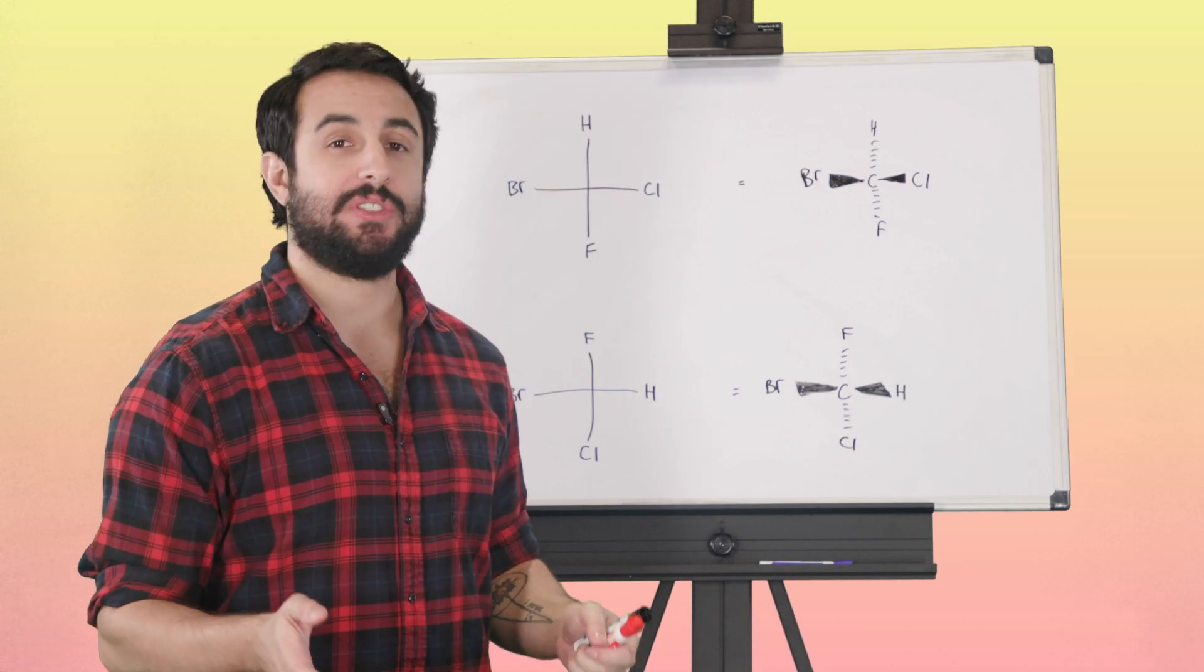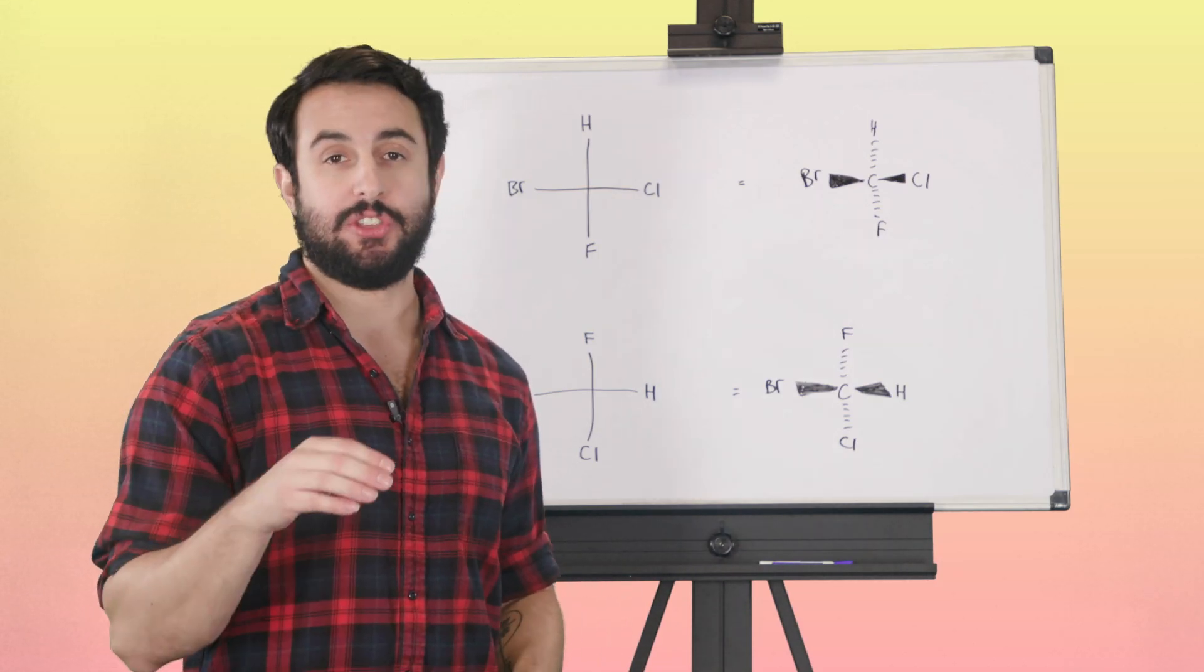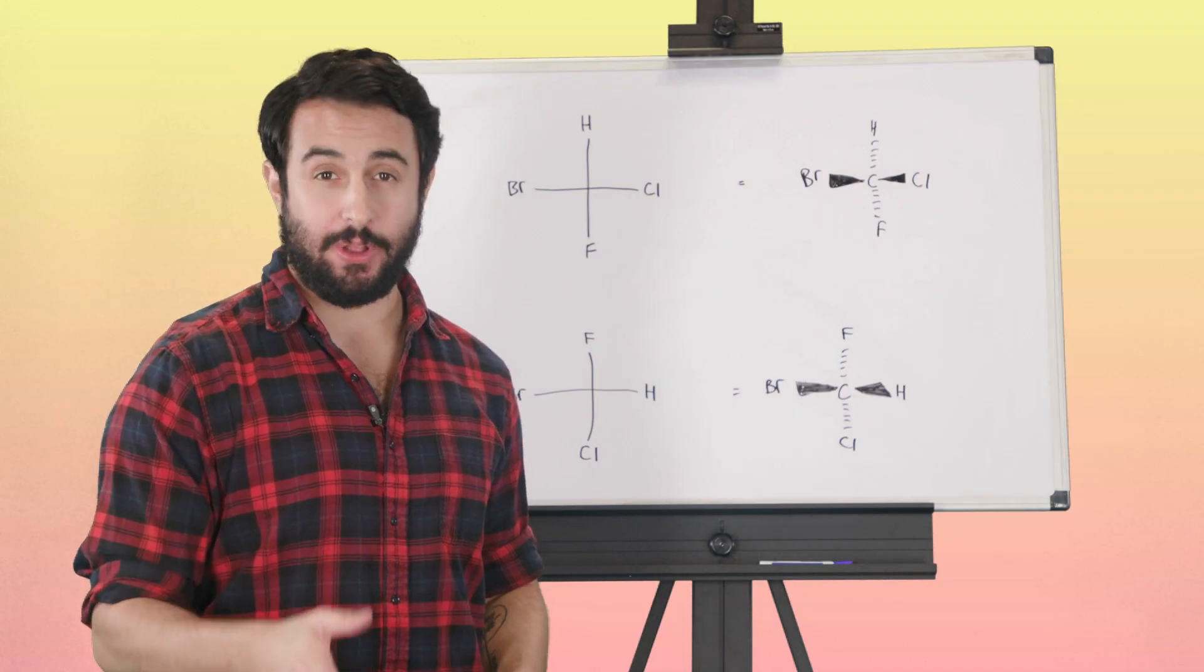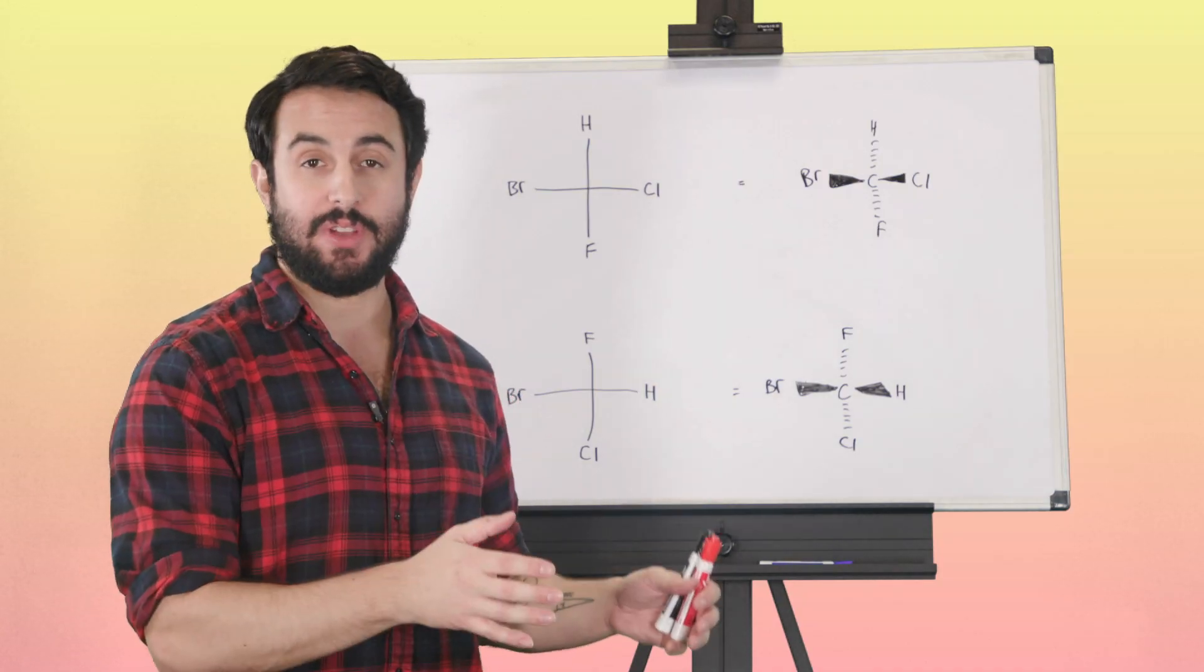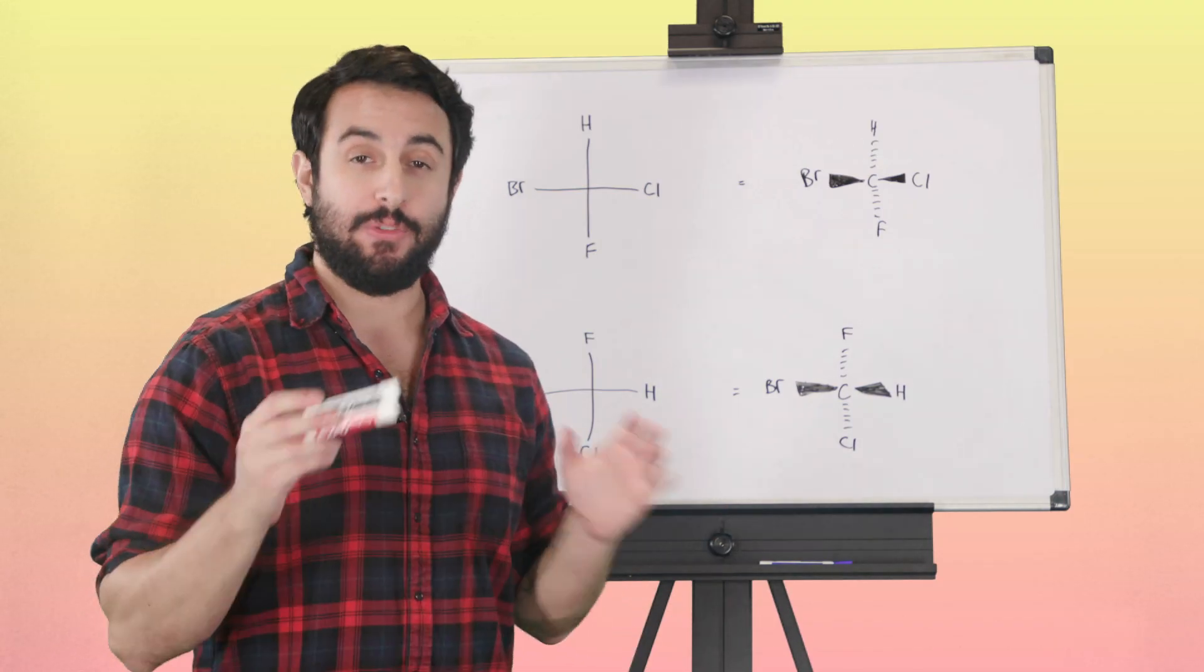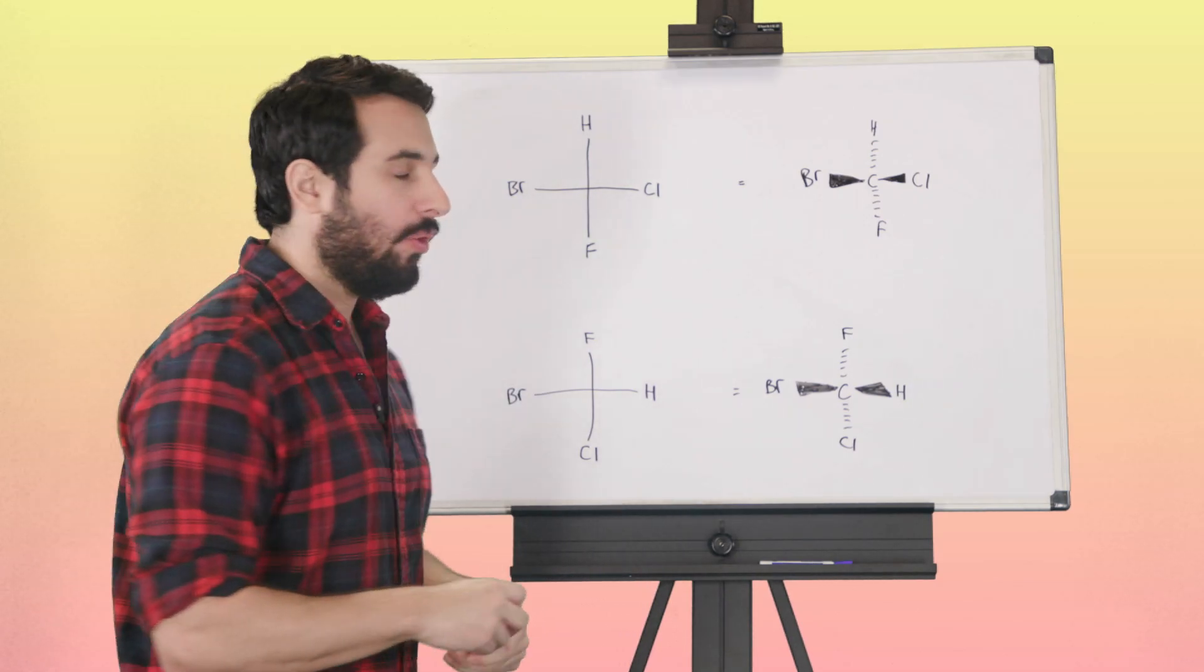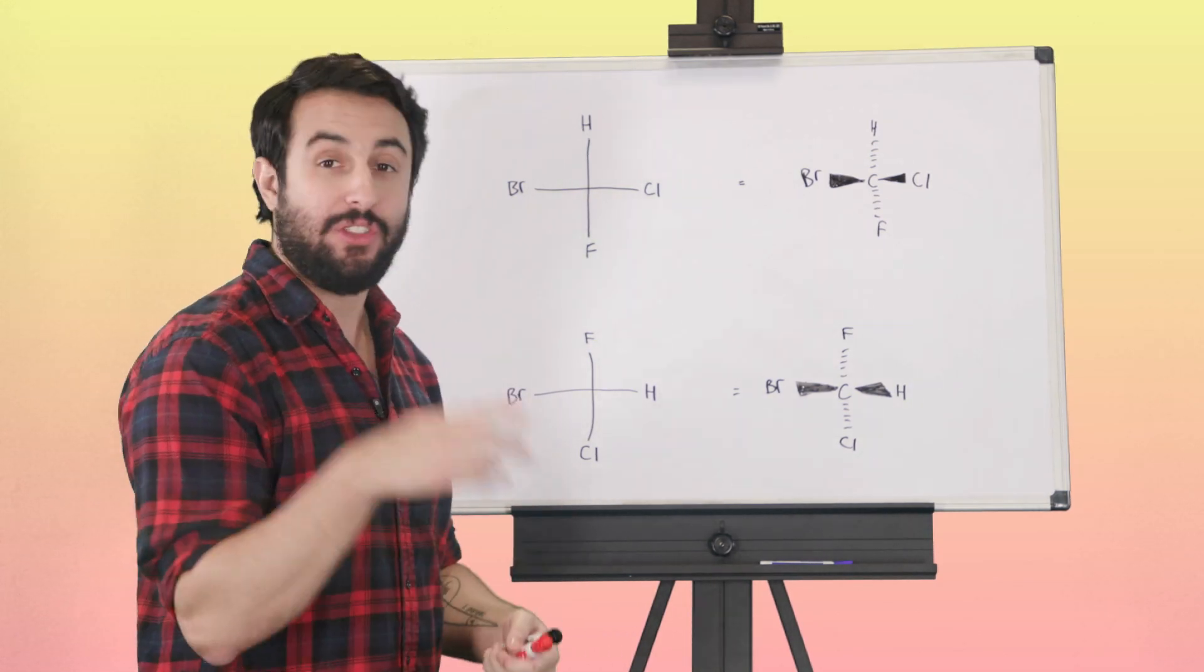We're going to want to be able to assign R and S on molecules written in Fisher notation. To do this, we need the Cahn-Ingold-Prelog convention. If you haven't seen my tutorial on that convention yet, watch that one first. But if we're up to speed with that, then we can look at a molecule here.